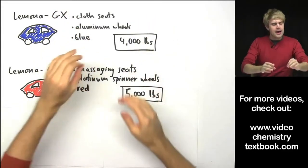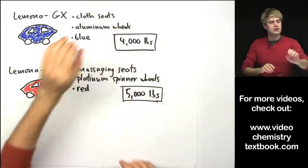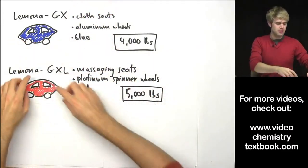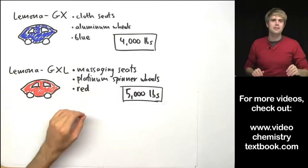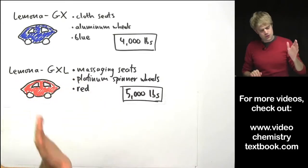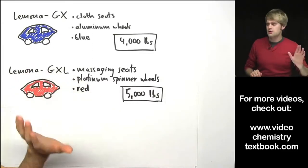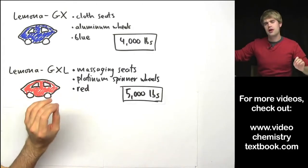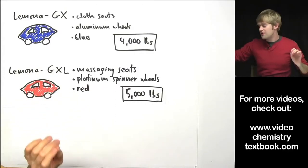Either way even though these are different models that have different features they are both Lamonas because they have this distinct lemon-like shape. In this way the models of the Lamona are very much like isotopes of an element.